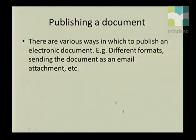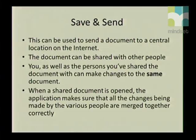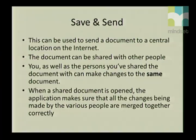We are going to look at the section on publishing a document. There are various ways of publishing a document — it means publishing an electronic document in different formats, such as sending it as an email attachment. Before you can publish a document you have to save it. Using the Save and Send option allows you to send your document to a central location so it can be shared with other people who can make changes at the same time.